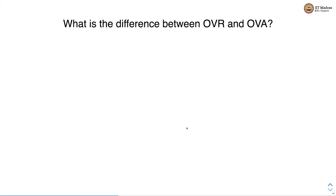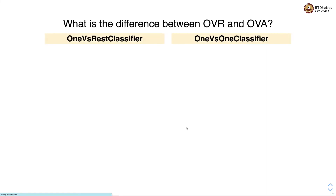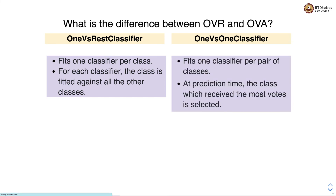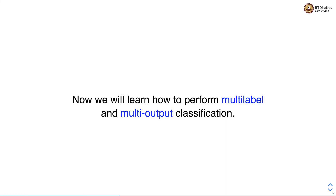To summarize the difference: OVR fits one classifier per class, with each classifier fitted against all other classes. One versus one classifier fits one classifier per pair of classes, and at prediction time the class with the most votes is selected.